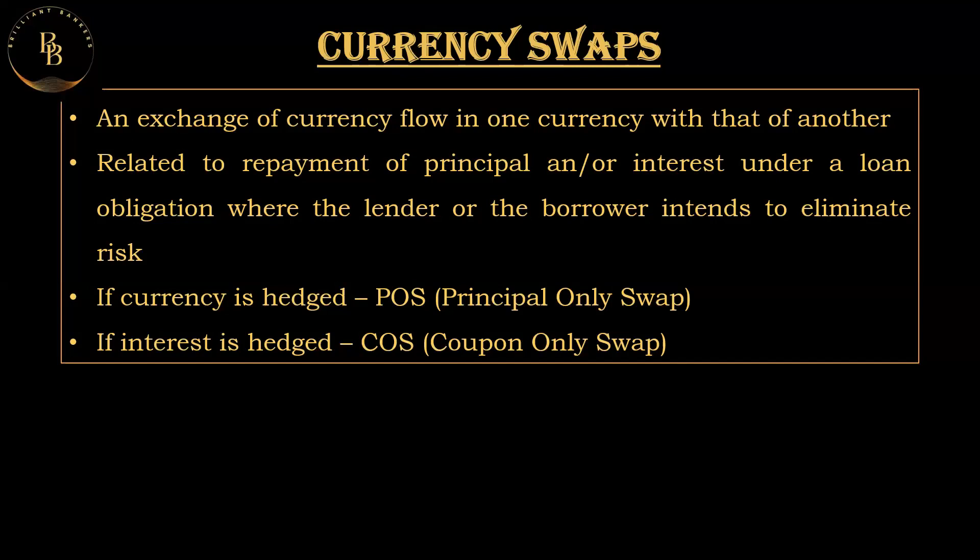There is a third type: a principal-plus-one (P+1) swap, where the Indian company and foreign company agree to exchange the principal amounts along with an additional fixed amount. The Indian company pays the principal of the foreign company's loan in INR plus an extra fixed amount, and the foreign company pays the principal of the Indian company's loan in local currency. This type of swap helps both companies manage currency risk while also providing an additional fixed payment, potentially serving as compensation for the currency risk taken on by one of the parties.